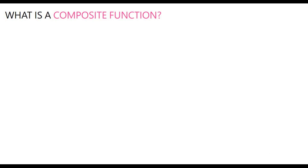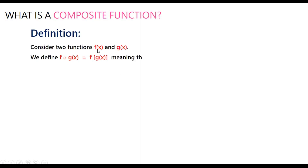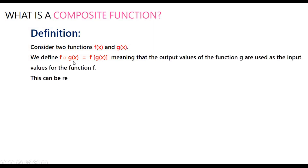So what is a composite function? Let's consider two functions f(x) and g(x). We define f composite g of x equal to f of g(x), meaning that the output values of the function g are used as the input values for the function f. This can be represented in an arrow diagram.